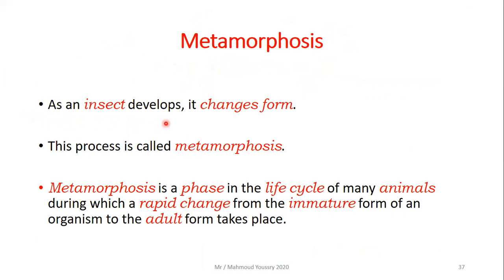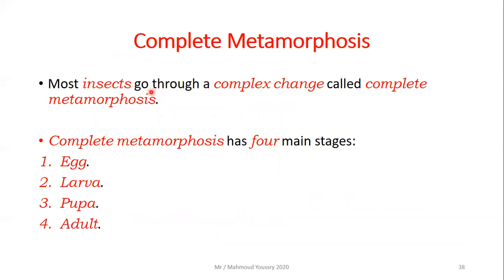As an insect develops, it changes form in a process called metamorphosis. Metamorphosis is a rapid change from the immature form to the adult form during an animal's life cycle. There are two types: complete and incomplete metamorphosis. Most insects go through complete metamorphosis, which has four stages: egg, larva, pupa, and adult.